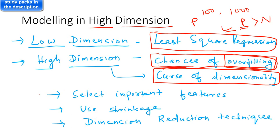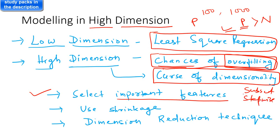To deal with high-dimensional situations where chances of overfitting are quite high, the first approach is feature selection methodology — selecting important features. Feature selection methods include subset selection, stepwise selection, and selecting variables based on correlation with the target variable. You can also use shrinkage methodology, where you force the coefficients of less important variables to be close to zero, which is as good as removing that variable from the model. The famous ones are regularized regression models like Lasso and Ridge regression.